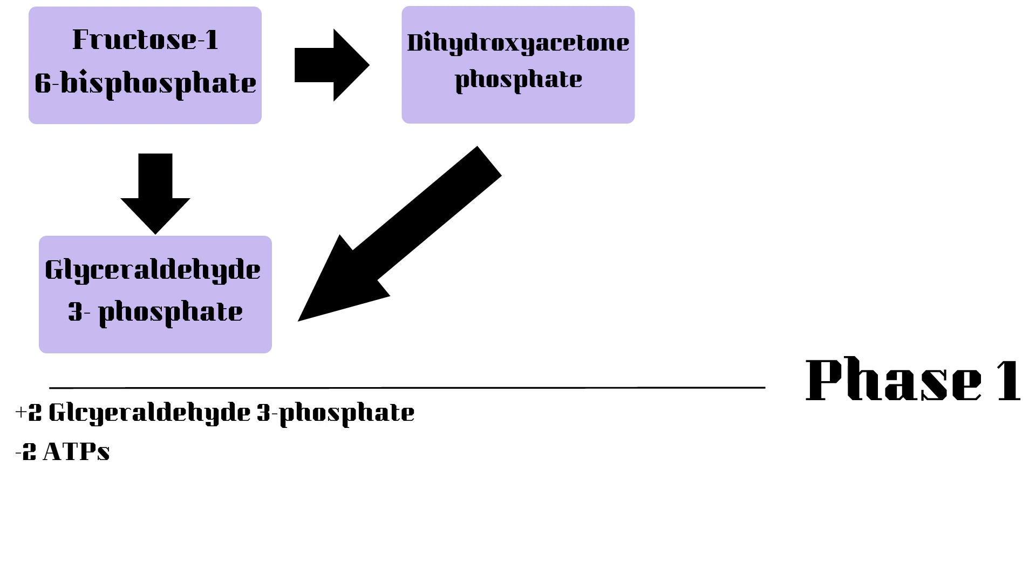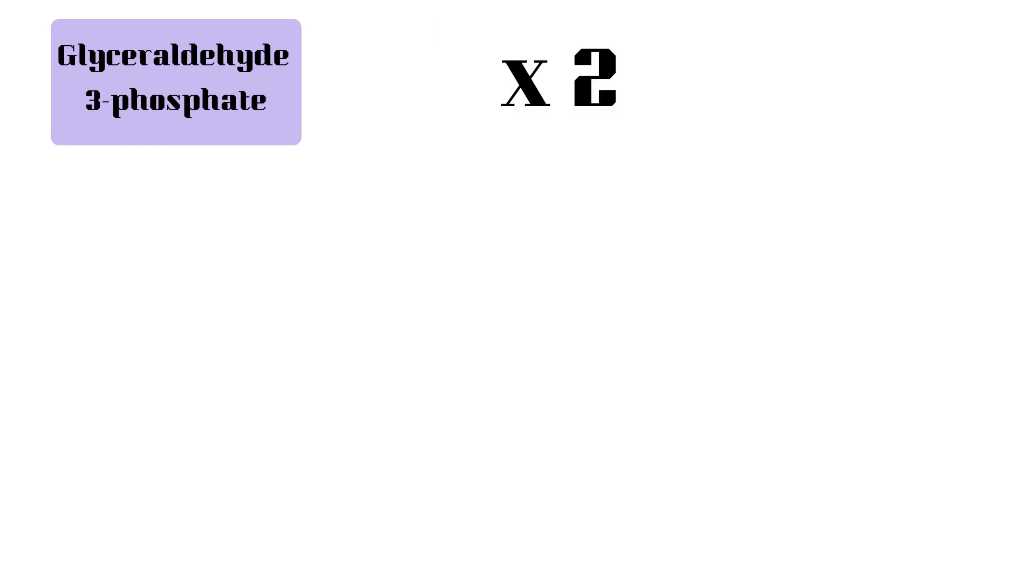In the next phase, we will use the two molecules to produce four ATPs. Now that we have our glyceraldehyde-3-phosphate, we can continue to the next phase.